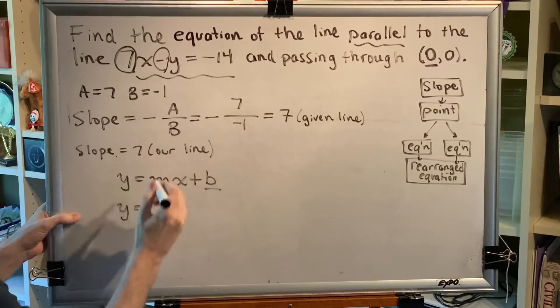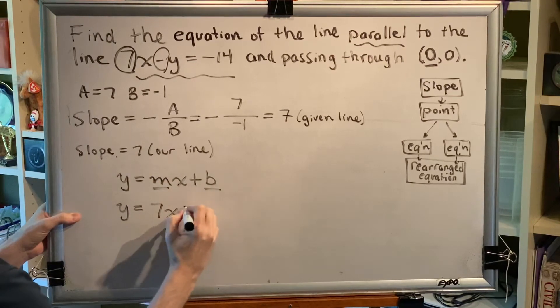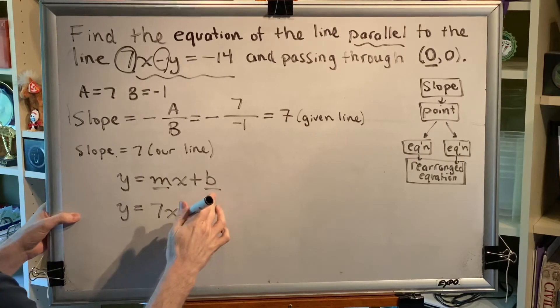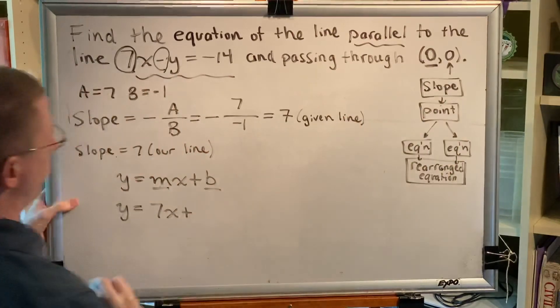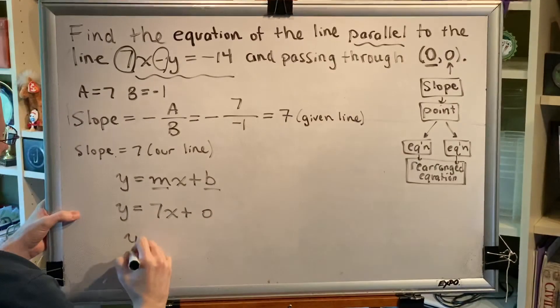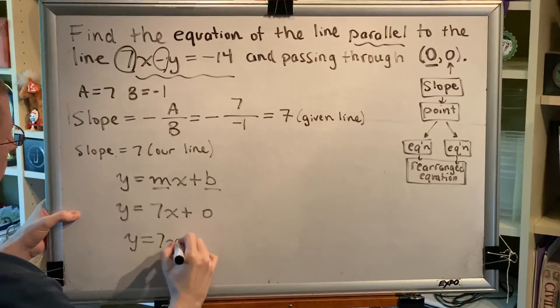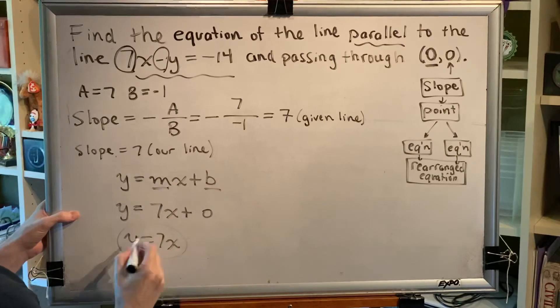Well, m is the slope and the slope of our line is seven, and b is the y coordinate of the y-intercept which is zero. So we get our final simplified answer y equals 7x.